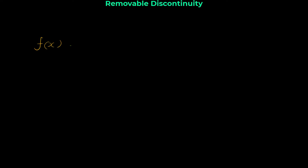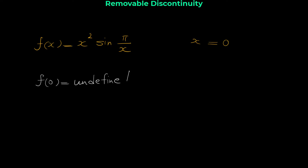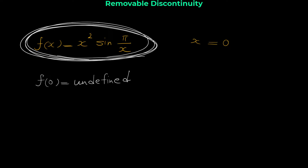Let me show you another example. We are given the function f(x) = x² · sin(π/x), and we want to prove that this function has a removable discontinuity at 0. Similar to the previous question, we start by checking f(0). If we plug in 0, we get π/0 — the denominator is 0 — so f(0) is undefined, and 0 is not in the domain of the function.